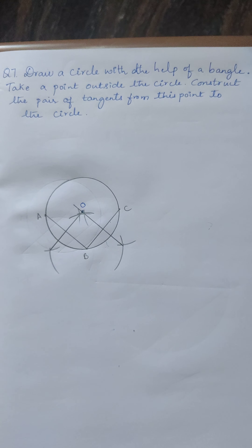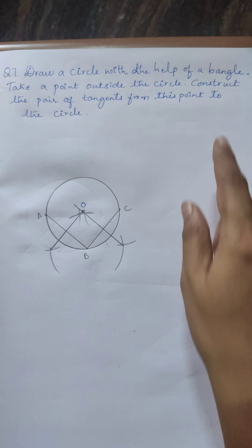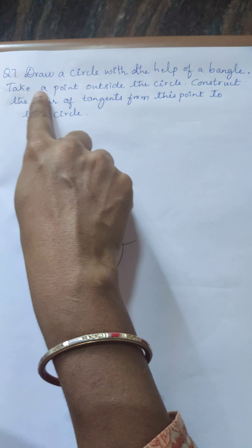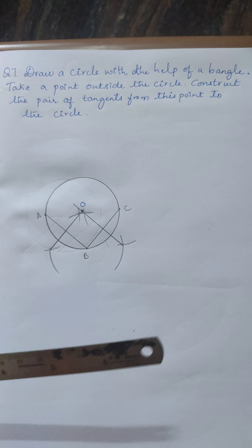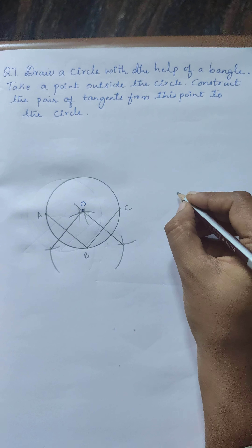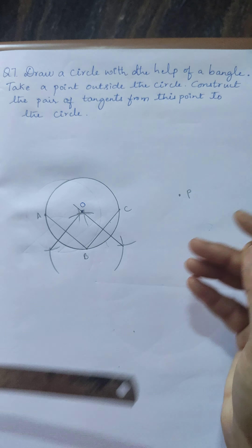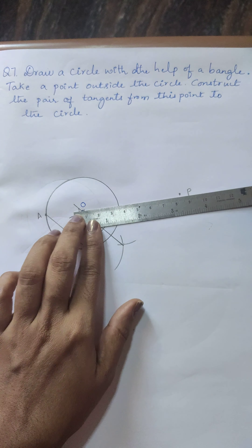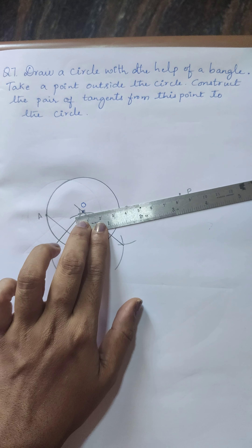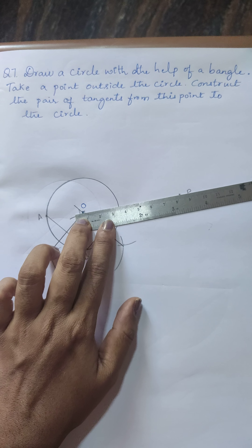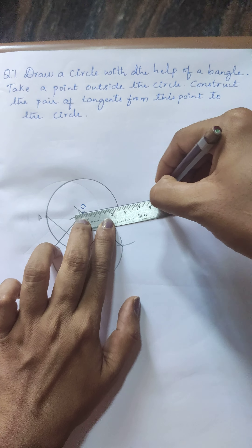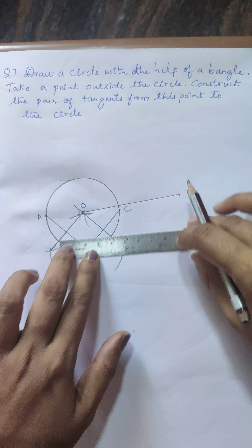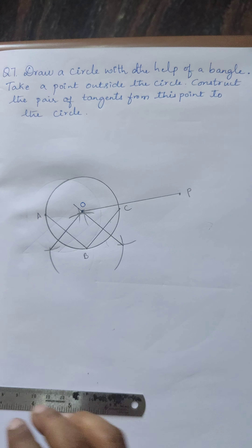Now, they have said to take a point outside the circle — you can take any point. Let us take point P here. Join O to P.